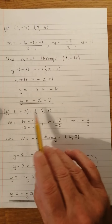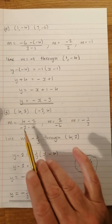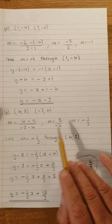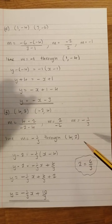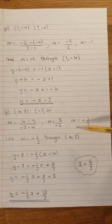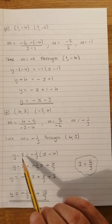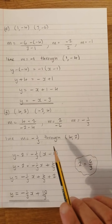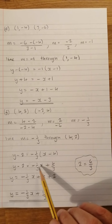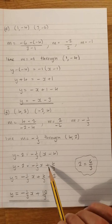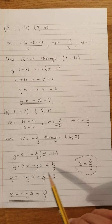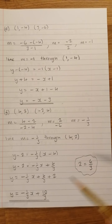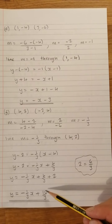For part f, the gradient is (4 − 2) over (−2 − 4). 4 take 2 is 2, minus 2 take 4 is minus 6, giving minus one third. So we have a line with gradient minus one third going through (4, 2). So y minus 2 equals minus one third times x minus 4. Multiplying through: minus minus is a plus, 4 times one third is four thirds. So y equals minus one third x plus four thirds plus 2. Since 2 equals six thirds, four thirds plus six thirds is ten thirds, giving y equals minus one third x plus ten thirds.